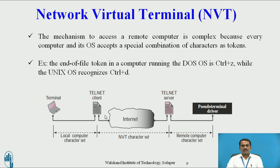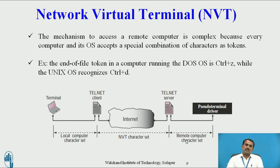This is the NVT block diagram. Here we have the Network Terminal, Telnet Client, and Telnet Server. The local character set data is sent to the Telnet Client. The Telnet Client sends the data through the internet as NVT characters — the same character set — and forwards it to the receiver side. The receiver performs the operations and then sends it to the remote computer character set via the pseudo terminal driver, which converts the data according to the end user's requirement.